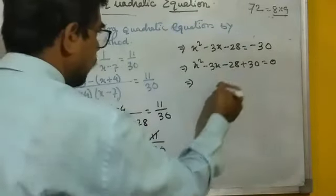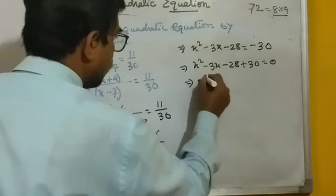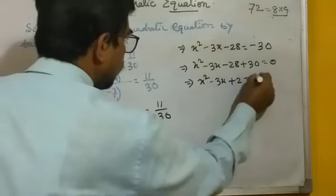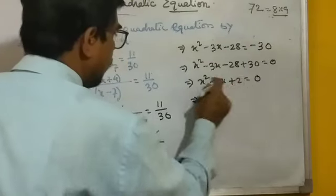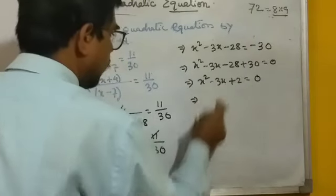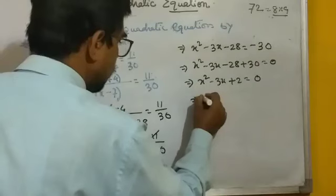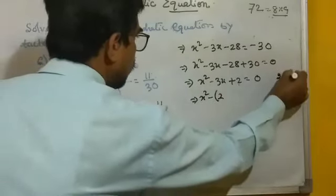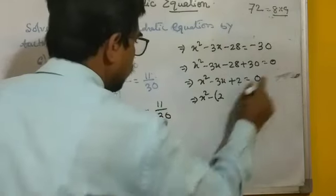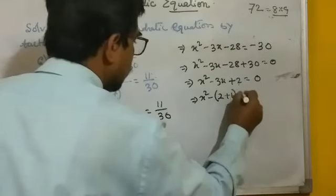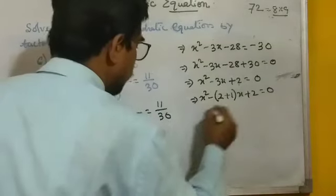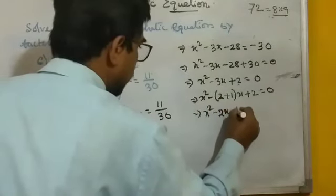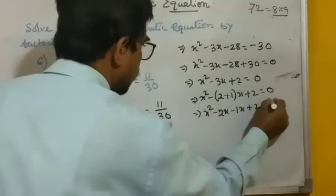Simplifying gives x squared minus 3x plus 2 equal to 0. We need two factors of 2 that sum to 3: that is 2 and 1. So we split the middle term: x squared minus 2x minus 1x plus 2 equal to 0.